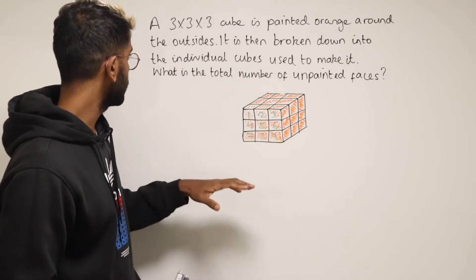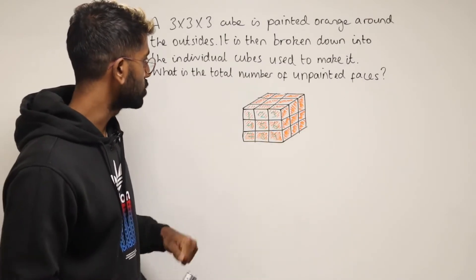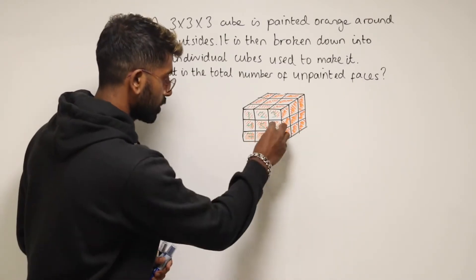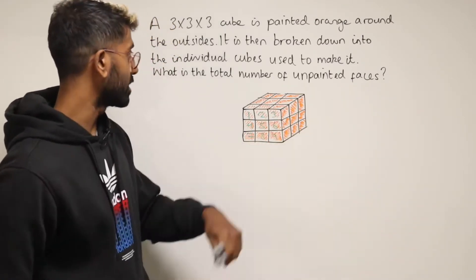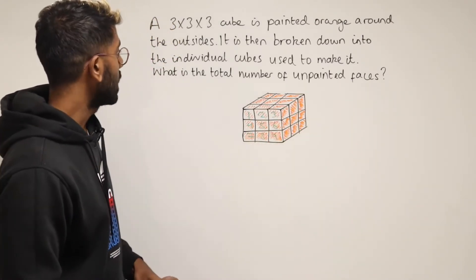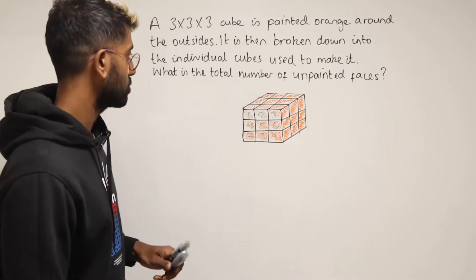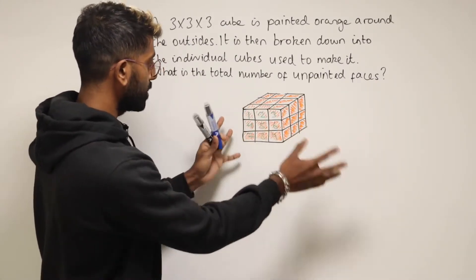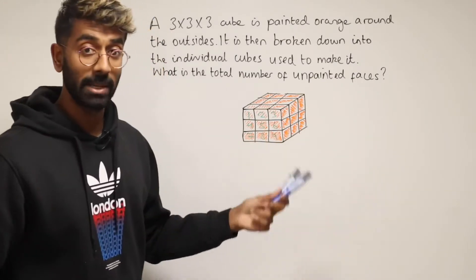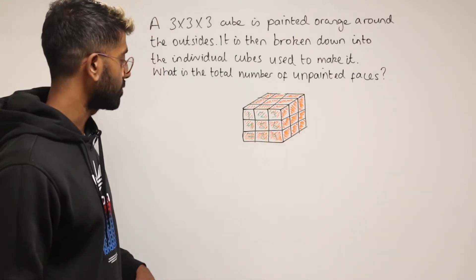Now it's then broken down into the individual cubes used to make it. We're going to break these cubes off and have them all in their little bundle over here. What we need to do is work out the total number of unpainted faces. Once we split this whole big cube up into each of the tiny cubes that made it, how many unpainted faces are there going to be?